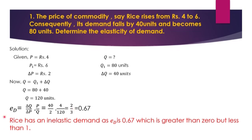Now we have all the values, so we can apply the formula. Elasticity of demand equals change in quantity divided by change in price, multiplied by original price divided by original quantity. This comes to 0.67. Since the value is greater than zero but less than one, this is an inelastic demand curve. We can say that rice has an inelastic demand.